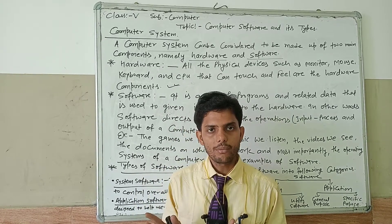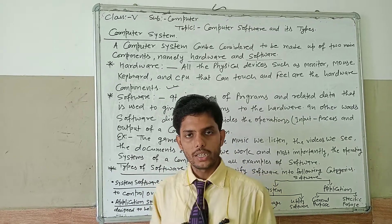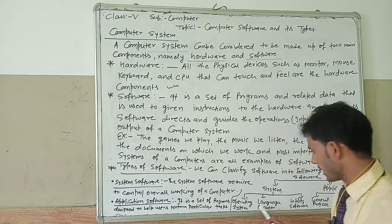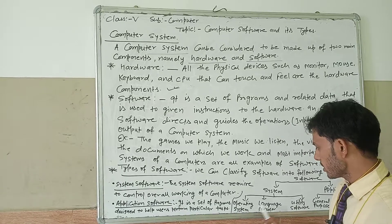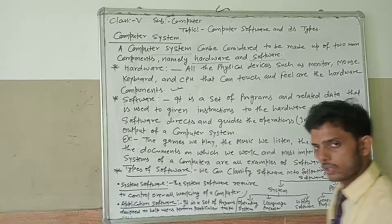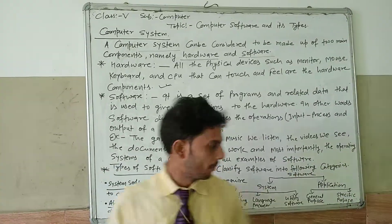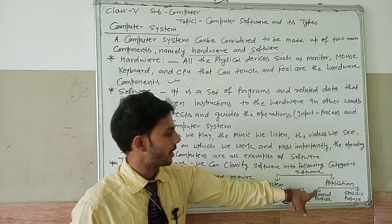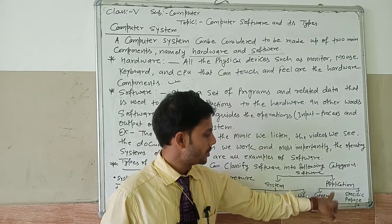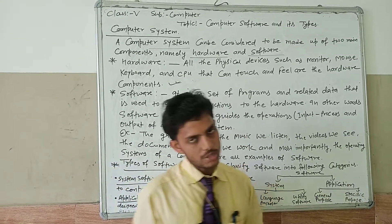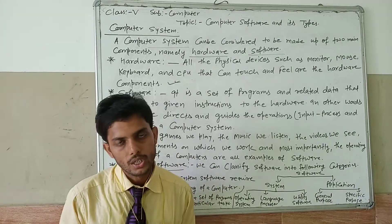System software is also categorized into three types: operating system, language processor, and utility software. Application software is also categorized into two types: general purpose and specific purpose.